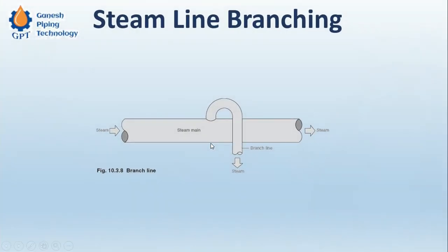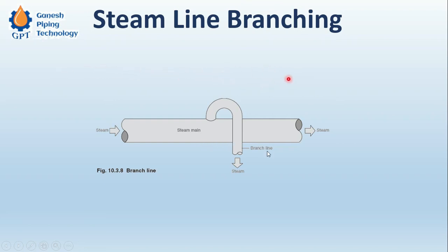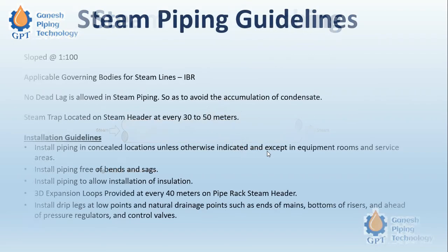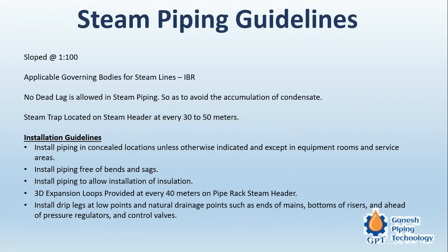Branching is taken from the top for steam because steam being a gas, we get a pure quantity of steam without traces of condensate. Since condensate settles at the bottom, taking the branch from the top ensures clean steam. This is an important guideline to consider when designing or installing steam piping.